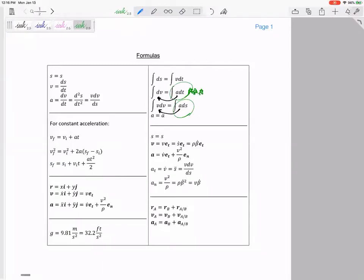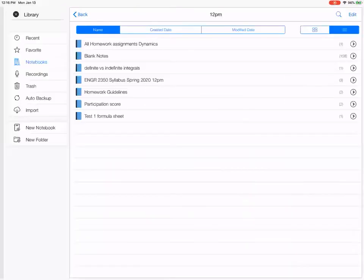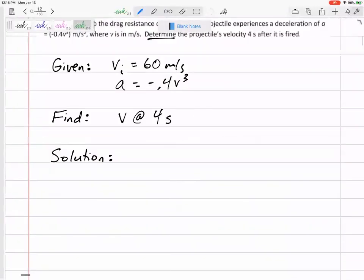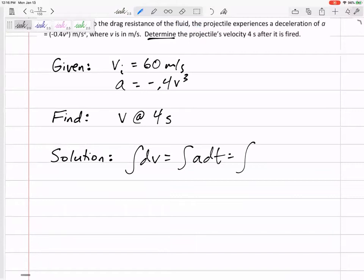I'd use this one if it said something about position. It says after four seconds, so it talks about time. So I think this one right here: integral dv equals integral a dt. So go back up to our notes and just start working out the integral dv equals integral a dt.